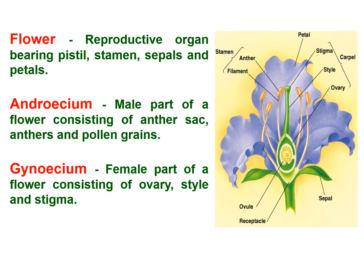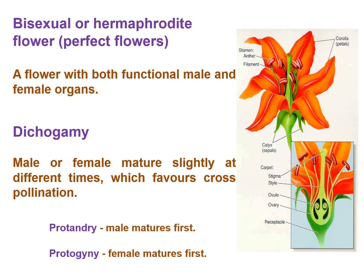The flower is a reproductive organ bearing pistil, stamen, sepals, and petals. The androecium is the male part of a flower consisting of anther sac, anthers, and pollen grains. The gynoecium is the female part consisting of ovary, style, and stigma. A bisexual or hermaphrodite flower has both functional male and female organs. Dichogamy refers to when male or female parts mature at slightly different times, favoring cross-pollination. Protandry is when the male matures first; protogyny is when the female matures first.